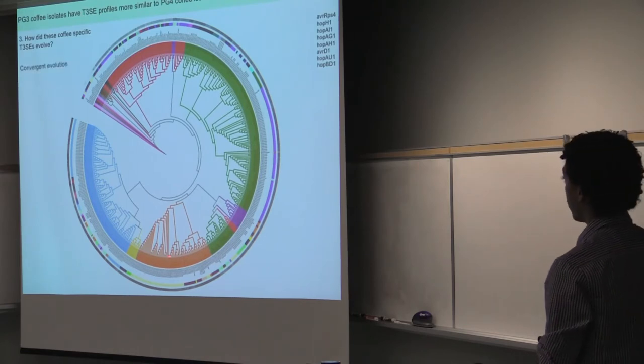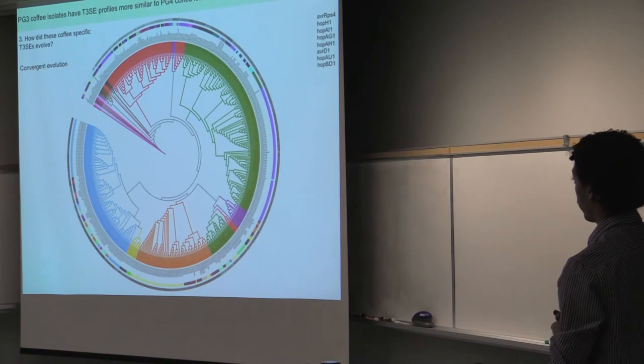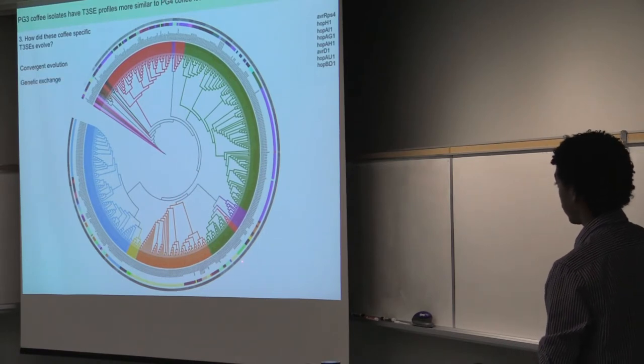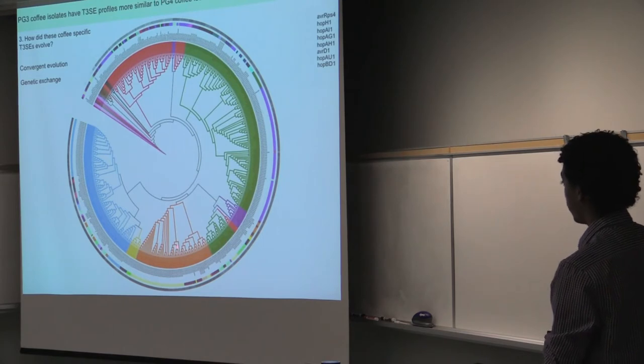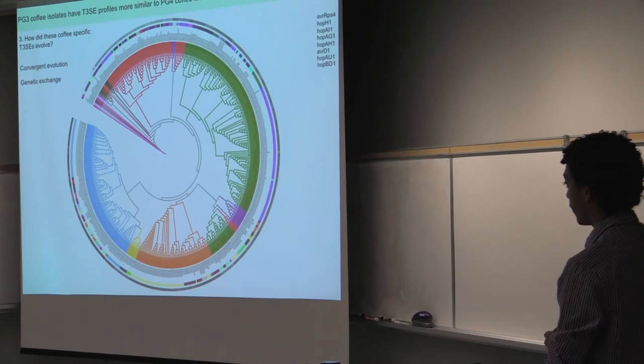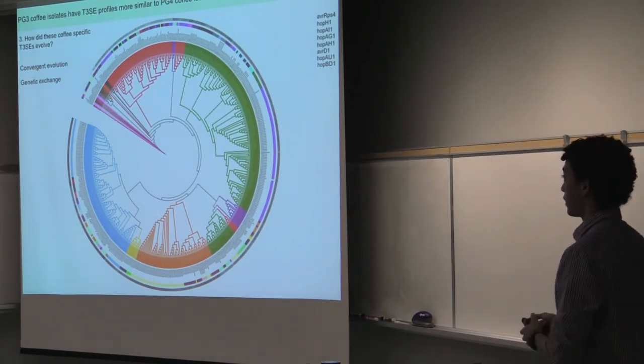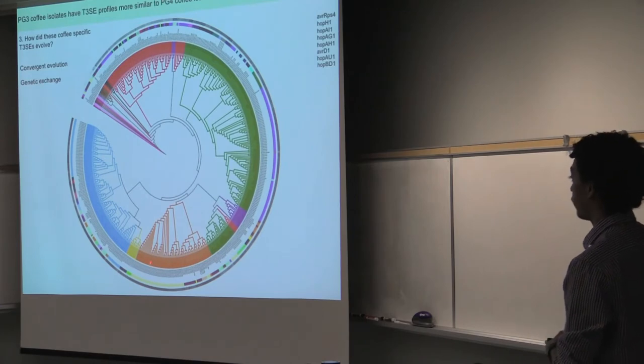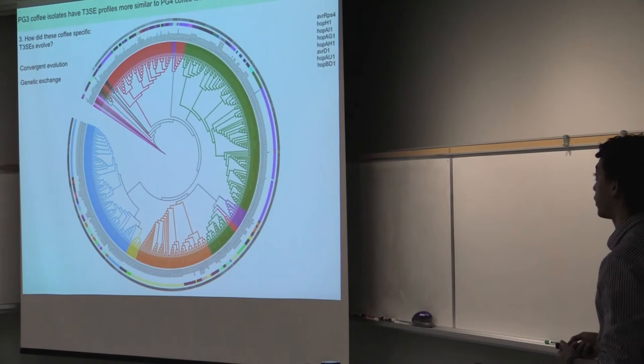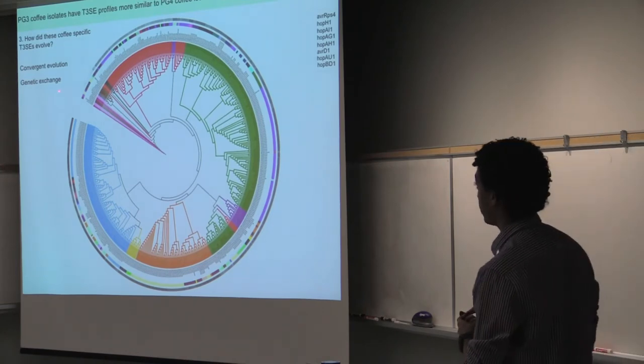So this is the clustering analysis that I showed you before with the profile of type 3 effectors. And the only way in which this particular configuration could have happened is that if both of these lineages from phylogroup 3 coffee isolates and phylogroup 4 coffee isolates evolved their effectors independently from each other. Or the second one is that one lineage actually evolved that first and then transferred to the other lineage. And that's why you see that pattern. So I decided to check for the second pattern first.